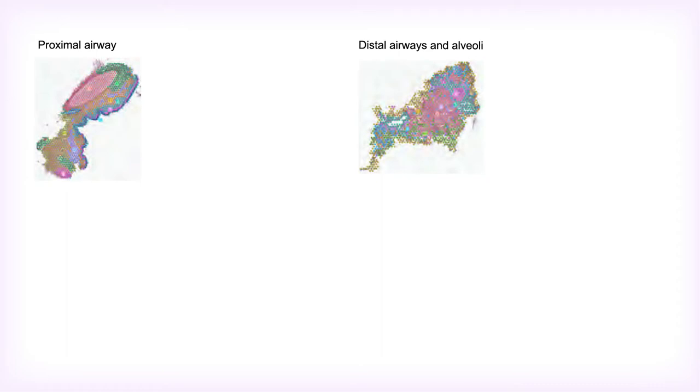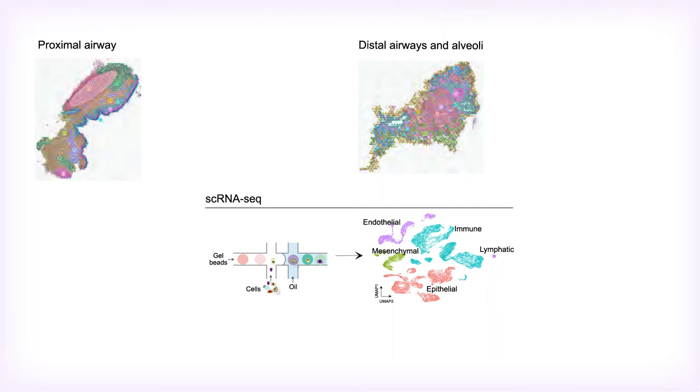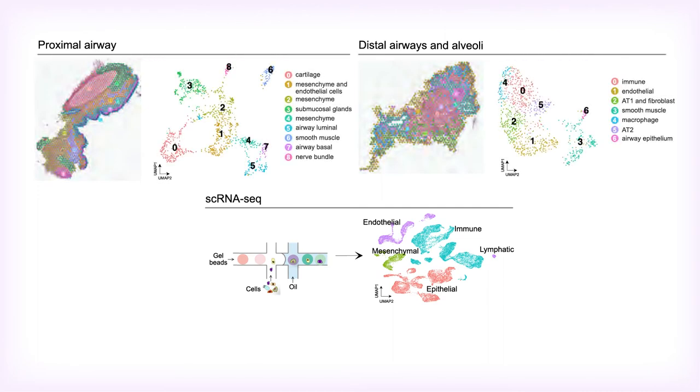When applied to human lung tissue, spatial transcriptomics produced physical maps of the cells that reside in the proximal and distal airways. Data gathered by single-cell RNA sequencing enabled the team to cluster cells according to their molecular machinery.